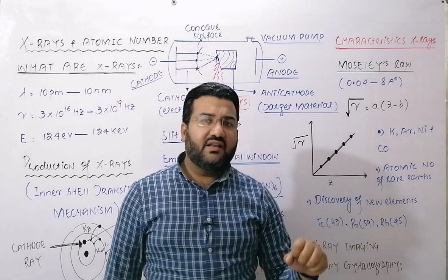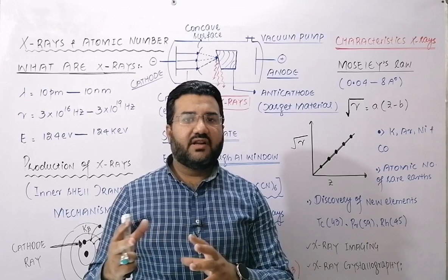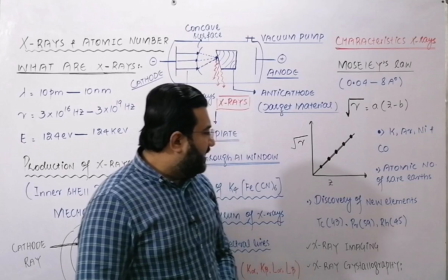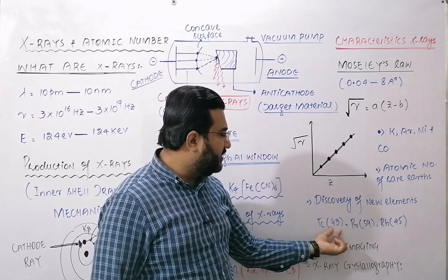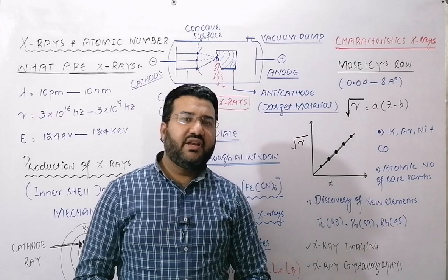Similarly, the atomic numbers of rare earth elements — lanthanides and actinides — were found using Moseley's law by studying their characteristic X-rays and finding the frequency of those X-rays. Many new elements were also discovered using Moseley's law, including Technetium (atomic number 43), Promethium (59), and Rhodium (45).